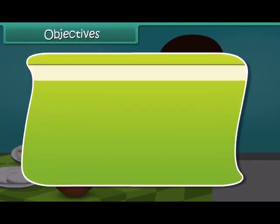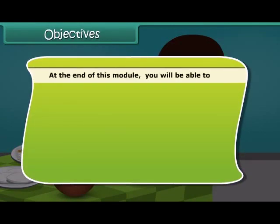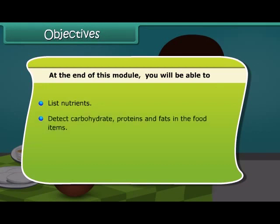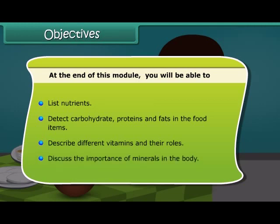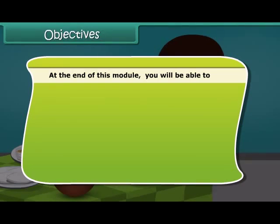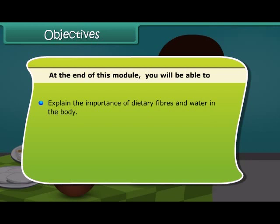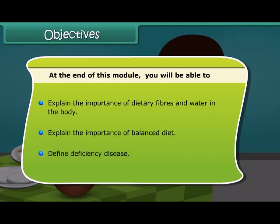Objectives. Dear friends, at the end of this lesson, you will be able to list nutrients and detect carbohydrates, proteins and fats in the food items. You will also be able to describe different vitamins with their roles and discuss the importance of minerals in the body. In addition to this, you will also be able to explain the importance of dietary fibers and water in the body, explain the importance of balanced diet and define deficiency diseases.